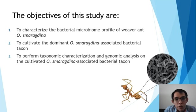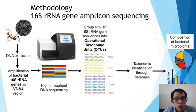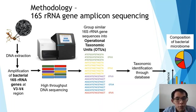Here are the three objectives of this study. The first objective was to characterize the bacterial microbiome of the weaver ant. To do this, I performed 16S rRNA gene amplicon sequencing, in which the weaver ant samples were collected for DNA extraction and amplification of the bacterial 16S rRNA gene at the V3-V4 region.